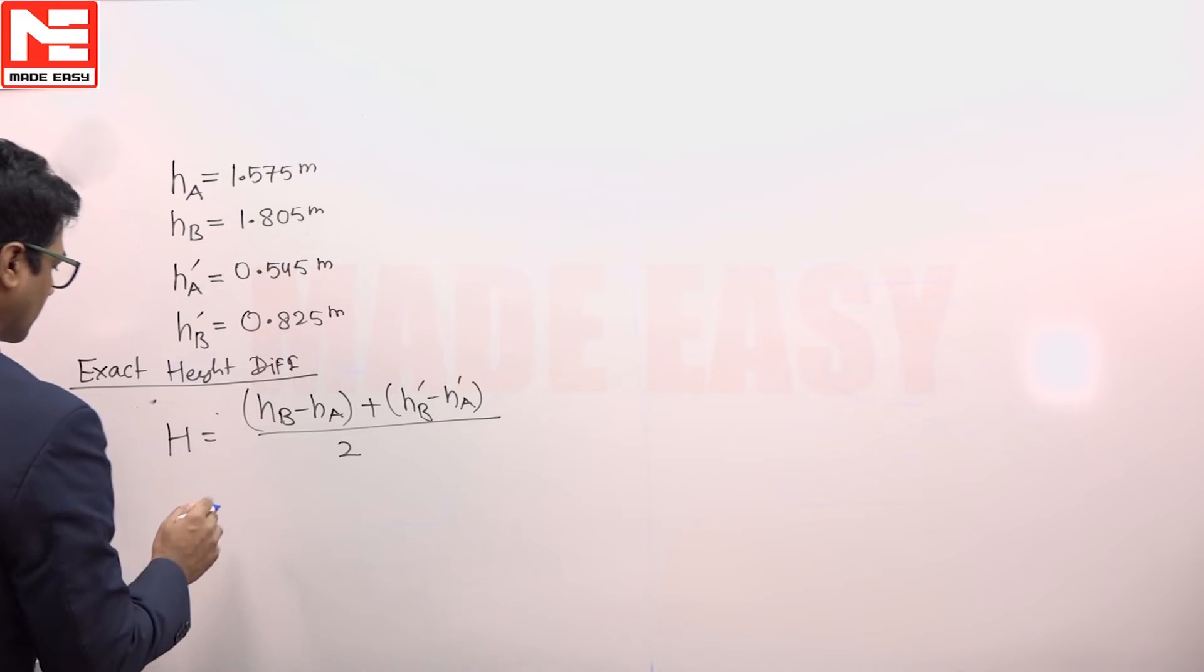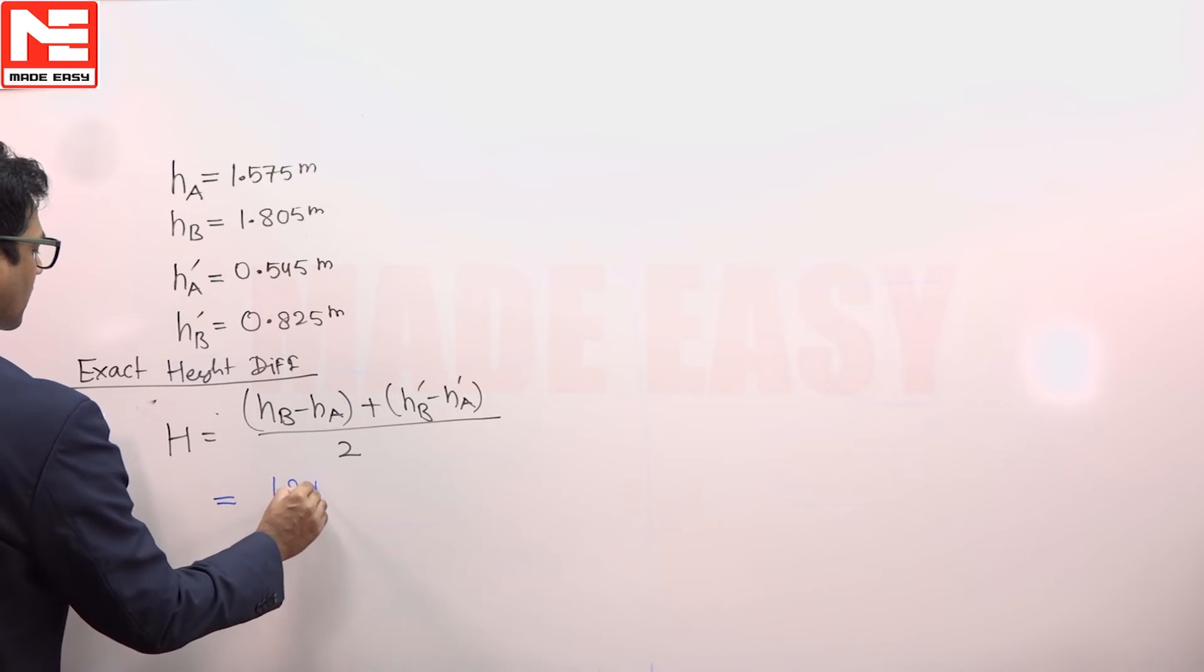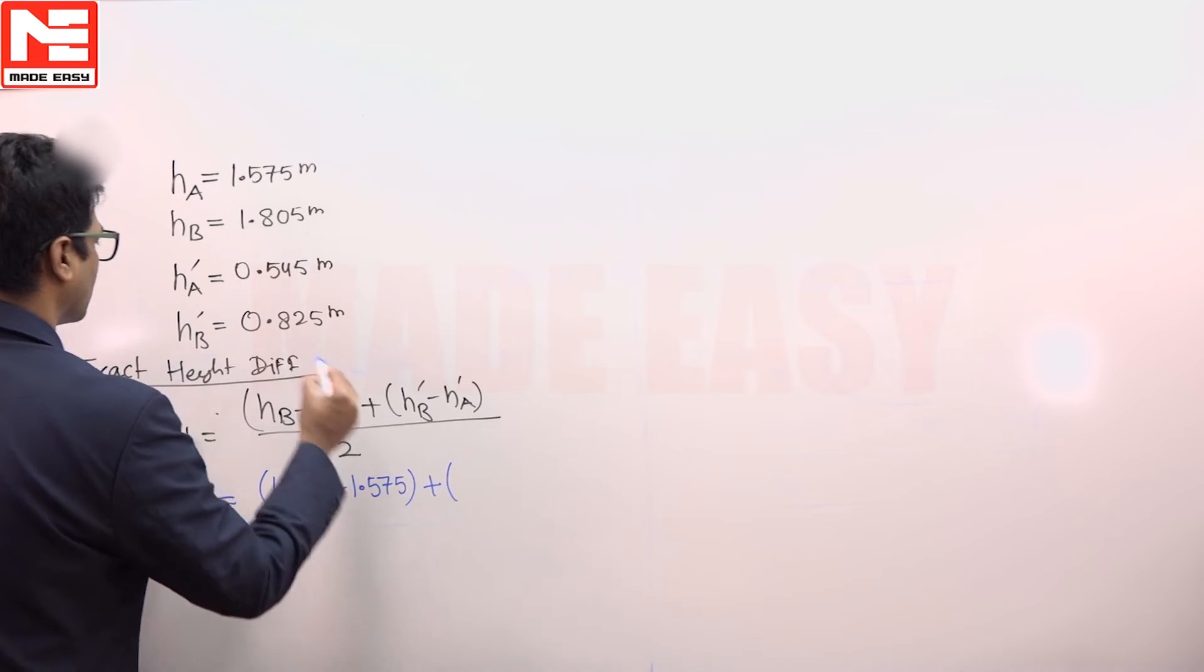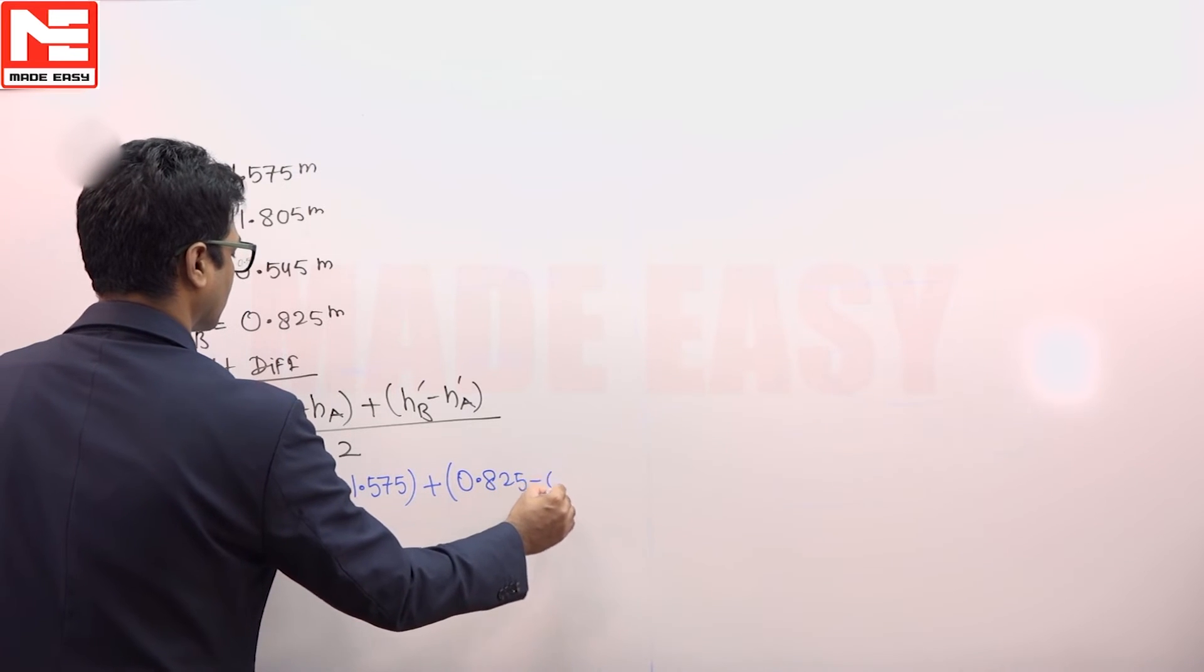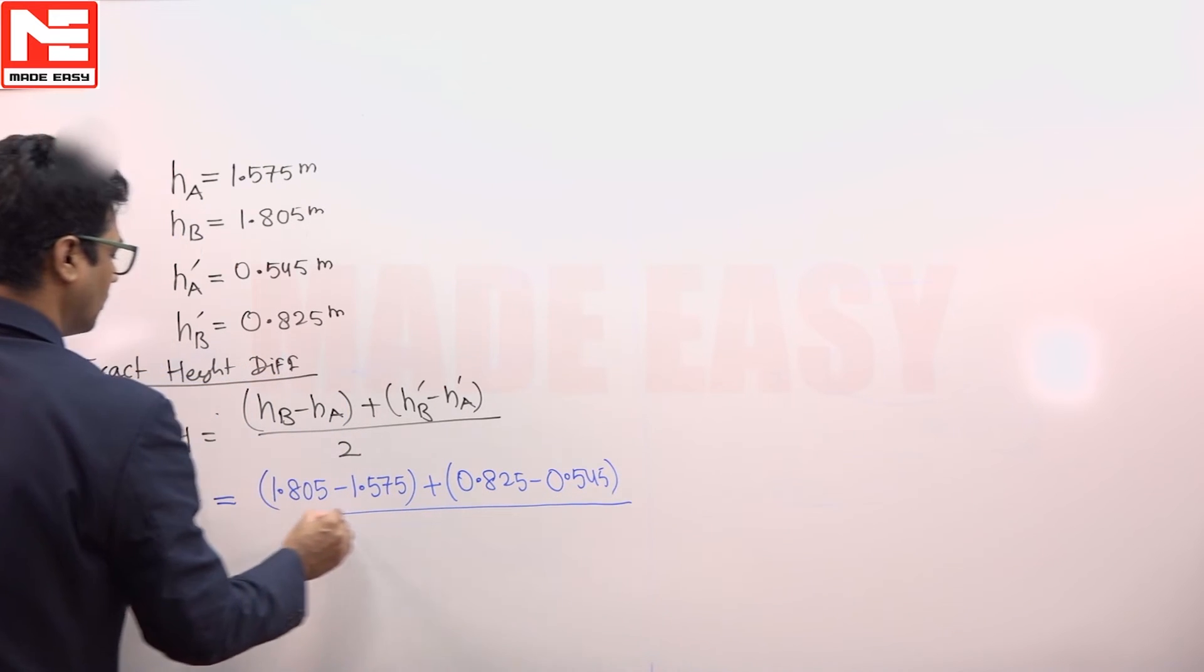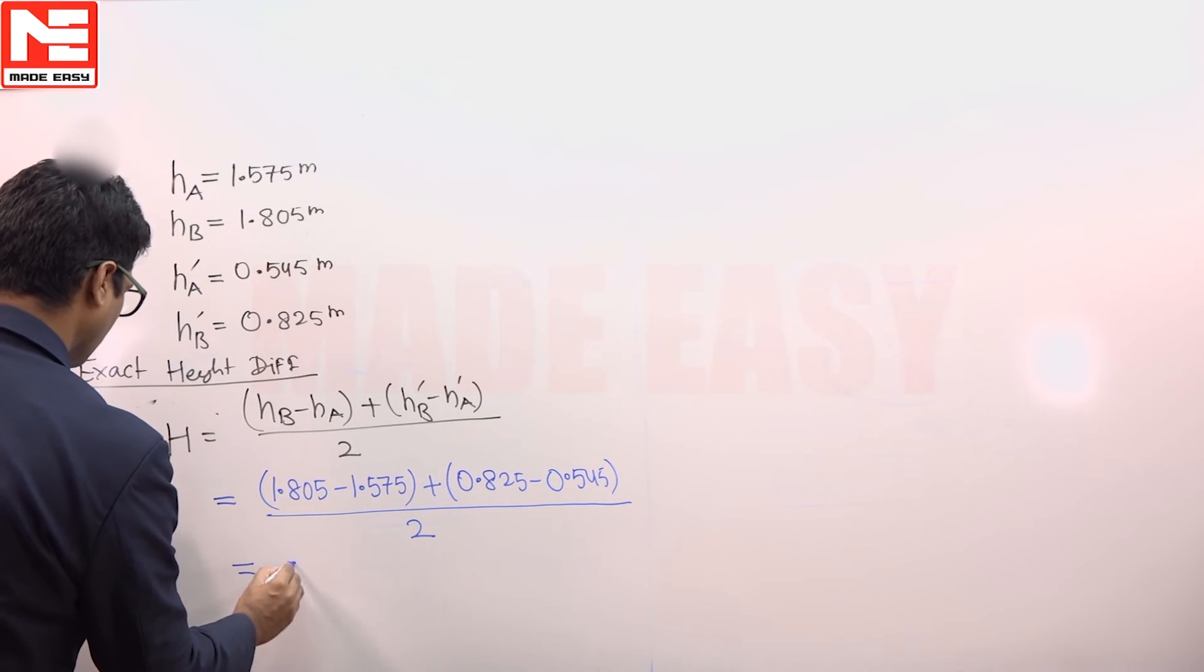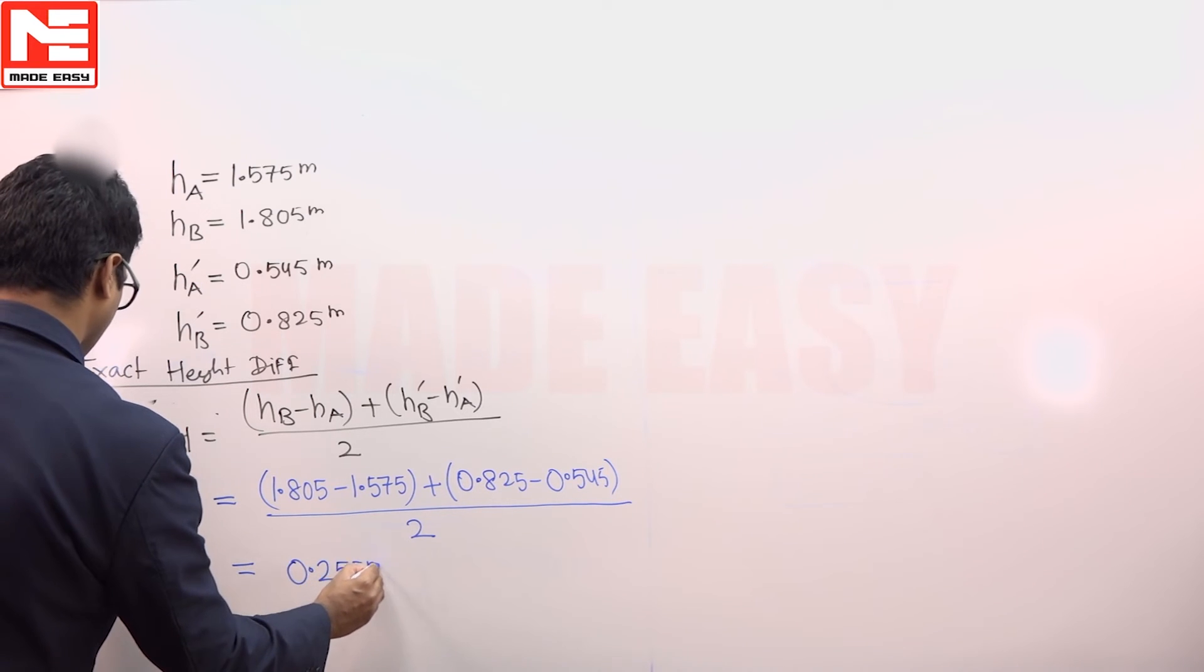This is equal to (1.805 - 1.575) + (0.825 - 0.545) divided by 2, and this value after calculation is equal to 0.255 meters.